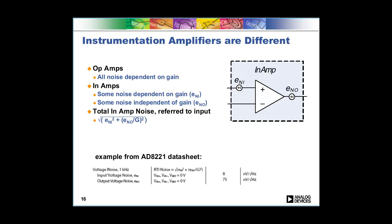In an instrumentation amplifier data sheet, we actually have two specs. We have the input referred noise or the ENI. And then we have the noise that's independent of gain, which is the ENO. And we have a nice little equation that shows you, depending on what gain you choose, how to combine those different noise sources. But just notice that there's these two noise sources instead of one.